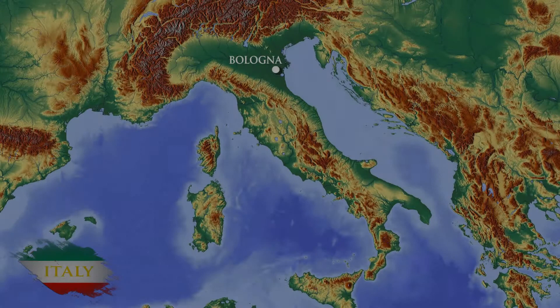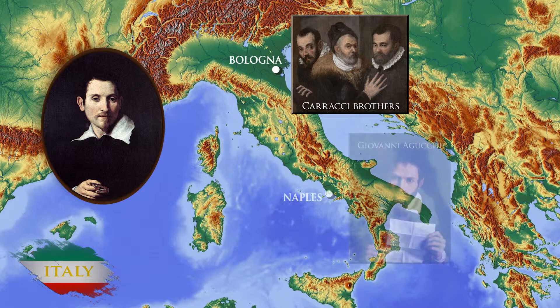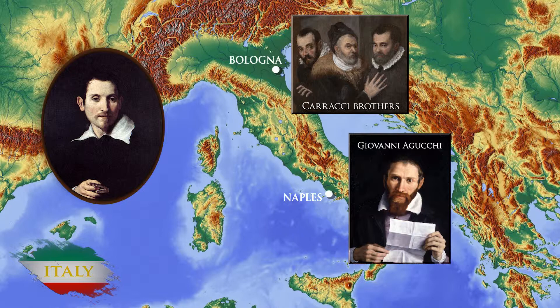Like Rainey, Domenichino studied at the Caracci Academy in Bologna. He later moved to Naples, where he attracted prominent patrons. However, threats made against his life by jealous Neapolitan artists forced him to return to Rome in 1634.